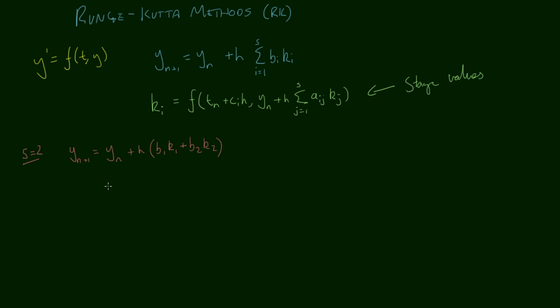That would be B1 K1 plus B2 K2. The stage values - we'll have two stage values. K1 will be F of T_n plus C1 H, and we'll have Y_n plus H times A11 K1 plus A12 K2. That's the first stage value. The second stage value is similar, except where we have an i subscript we've got a 2 instead of a 1. So those are our two stage values.